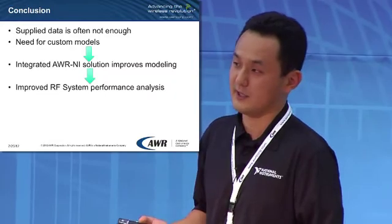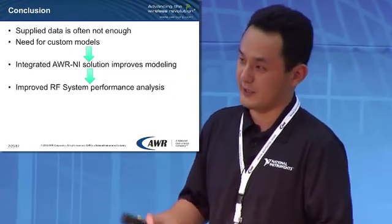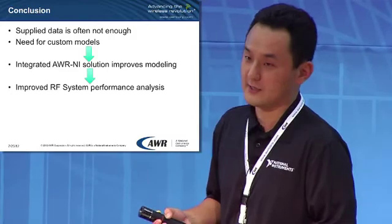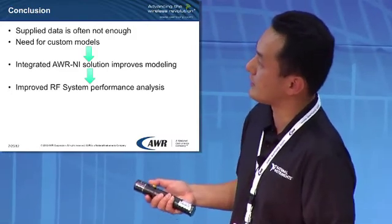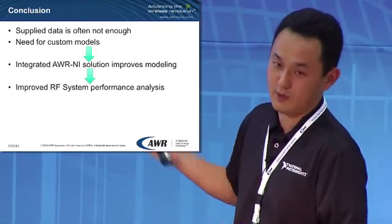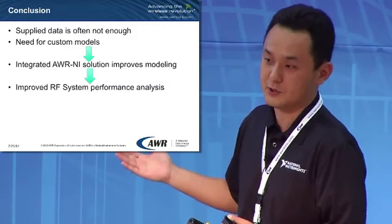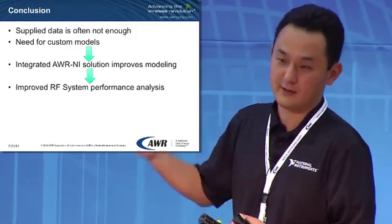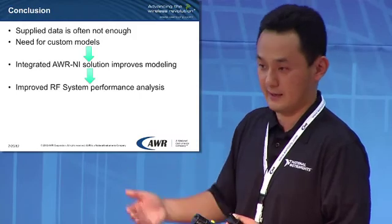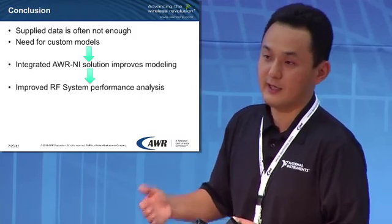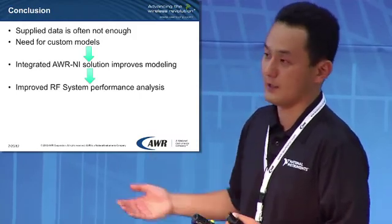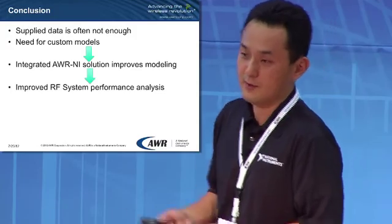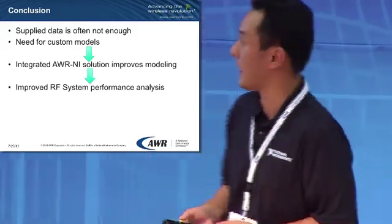The point here is that oftentimes either the parts you had lying around or the supplied data sheet weren't enough for your particular operating point for your RF subsystem, so there's a need for custom models. To alleviate some of those pains, you can use NI instruments to automate the measurement process, and then take that data directly into VSS to incorporate it into your simulation for better prediction of your RF subsystem design.